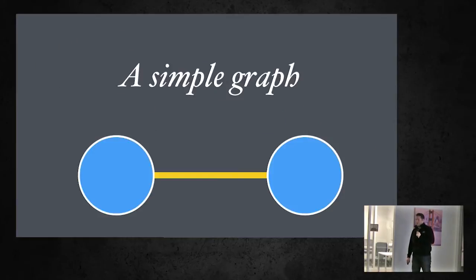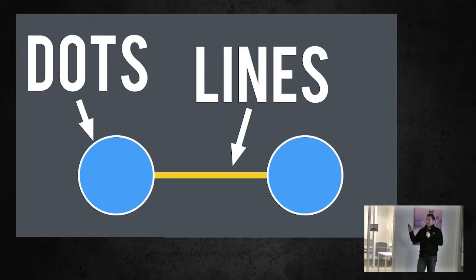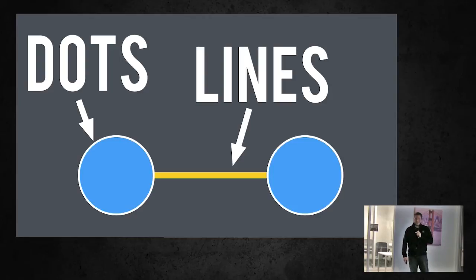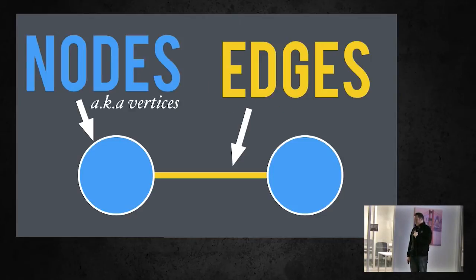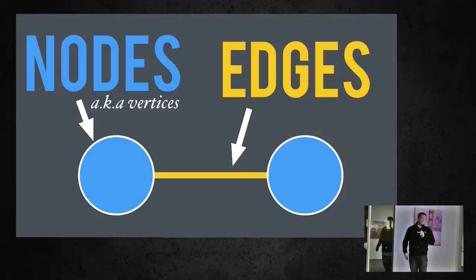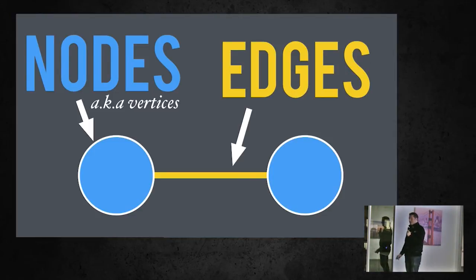Here's a simple example of a graph. It's got dots and it's got lines, but in graph theory we can't use simple terms like dots and lines — we have to use fancy words like nodes and edges. They also have another word for nodes, which is vertices, but for this talk we're going to use nodes.